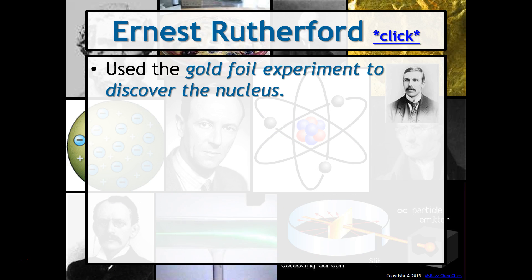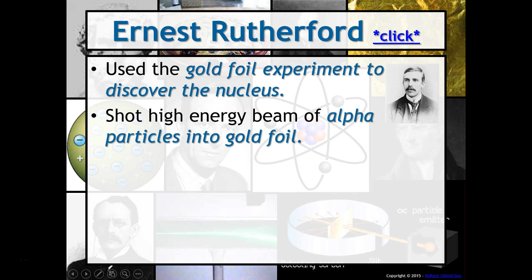Ernest Rutherford. Ernest Rutherford helped us to learn a little bit more about the atom by using the gold foil experiment. He used this experiment to discover the nucleus. To do this, he shot a high energy beam of alpha particles into gold foil. And you may say, what are alpha particles? Alpha particles are really helium nuclei where the electrons have been stripped away.